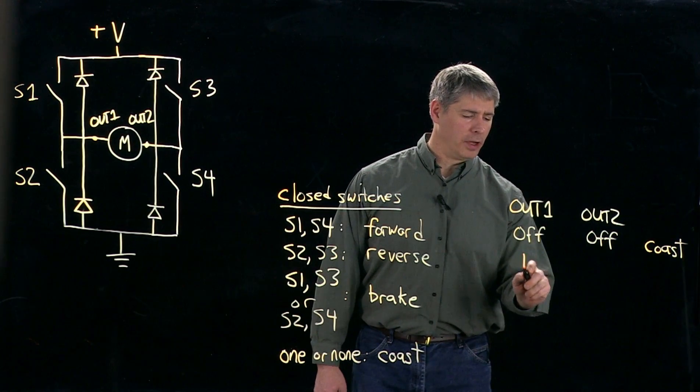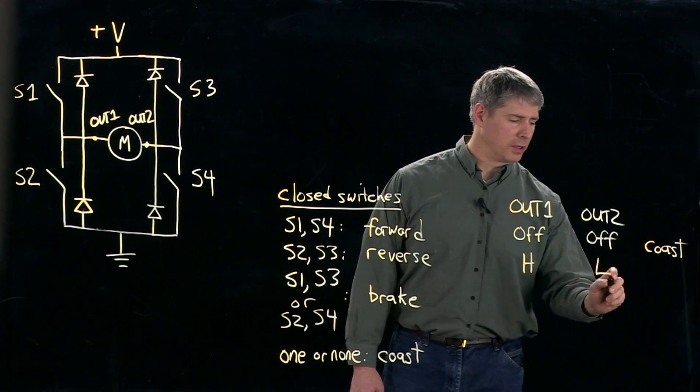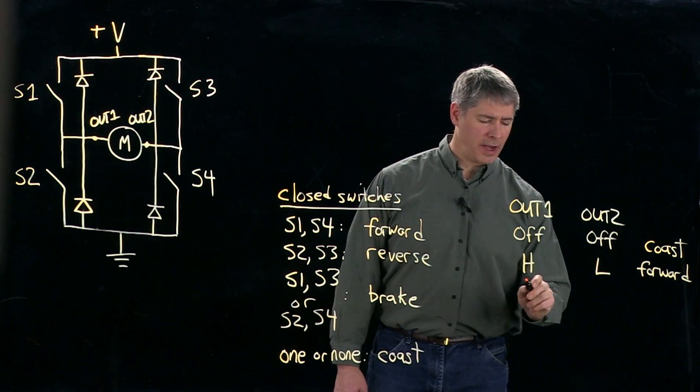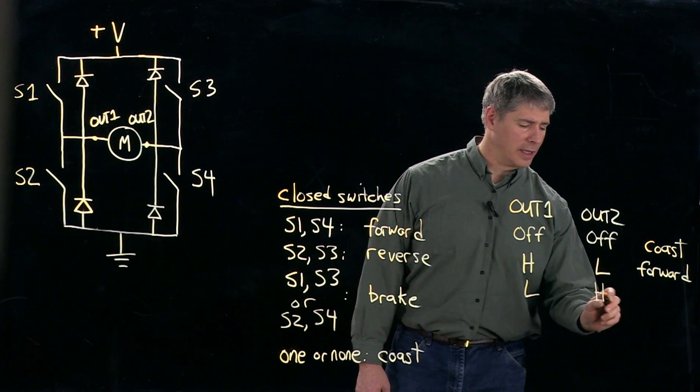You could have out one be high and out two be low and that would be forward motion. You could have out one be low, out two be high and that would be reverse.